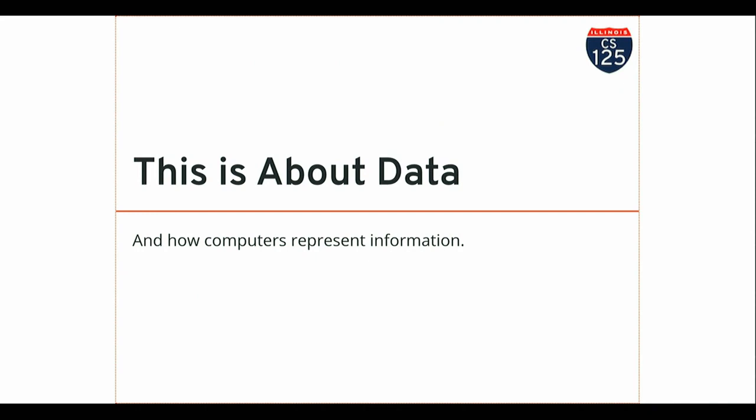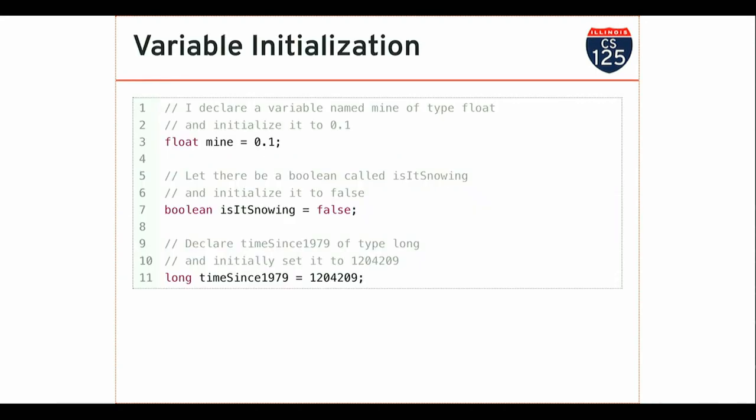This is really about working with data — how computers represent data. There's a lot of excitement about data science right now, but I want to make sure we're clear: if you're a computer scientist, you are a data scientist. Computer scientists have always worked with data. You learn how to do this, you're a data scientist — you can also do other things, but you can definitely work with data.